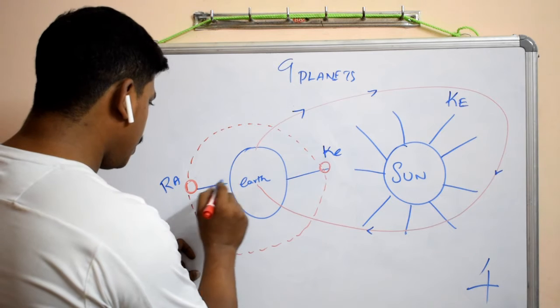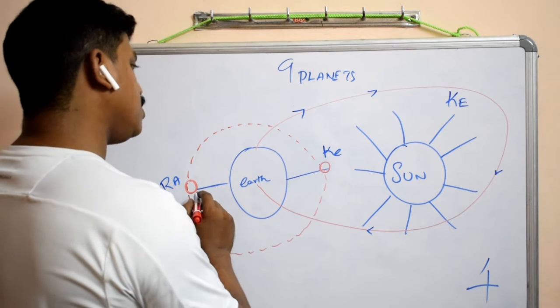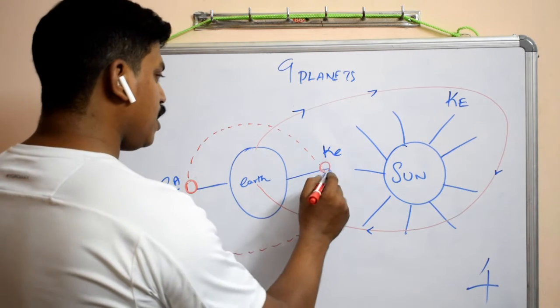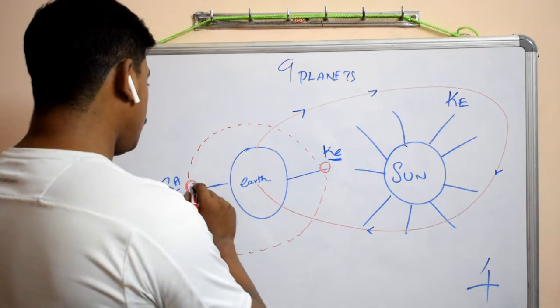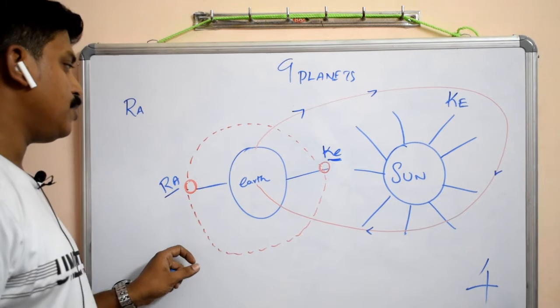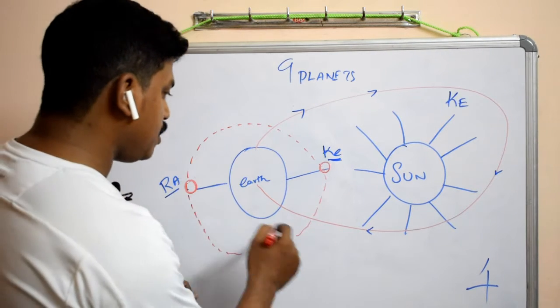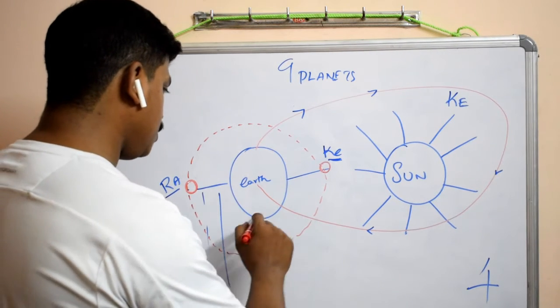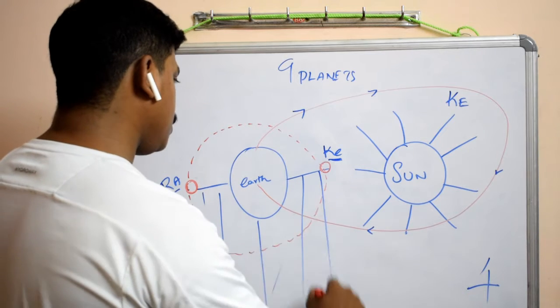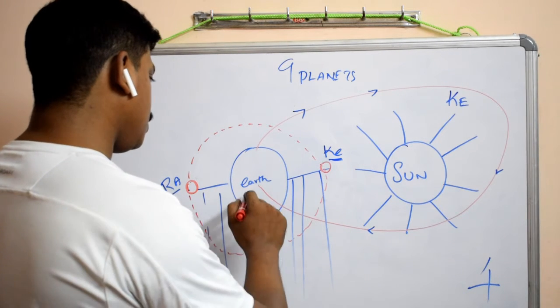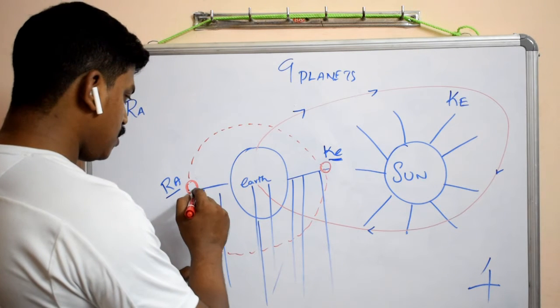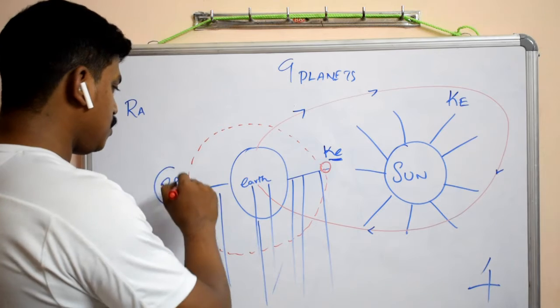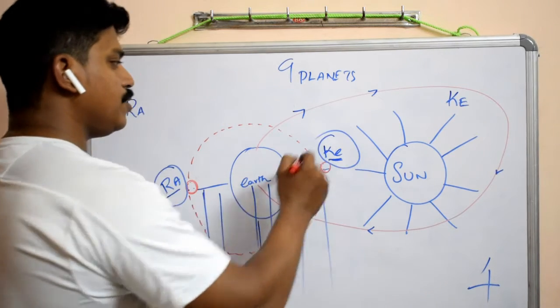Rahu is the point where outside of this Earth is called Rahu and Ketu. Here this dark point, the shadow point over the elliptical region. This point is called Rahu and this point is called Ketu.